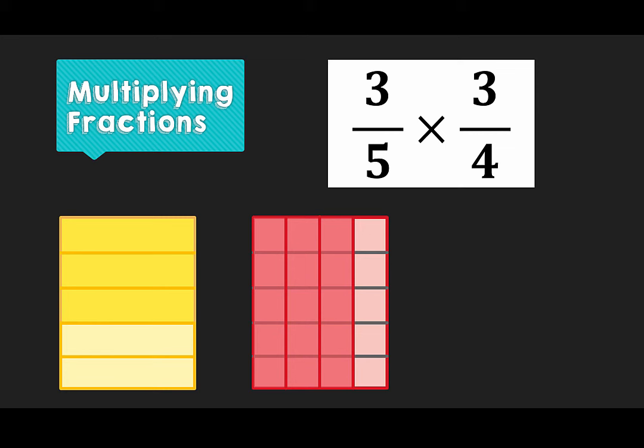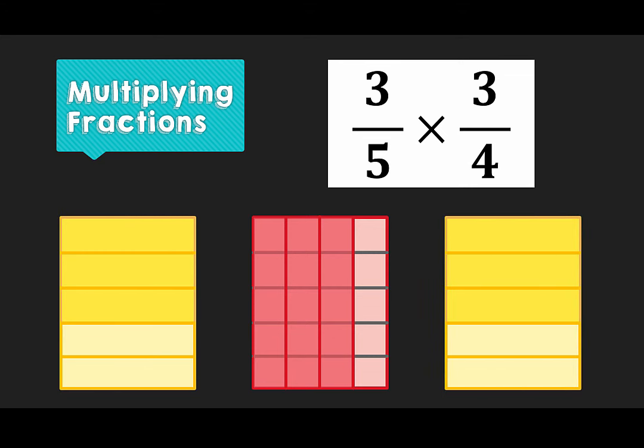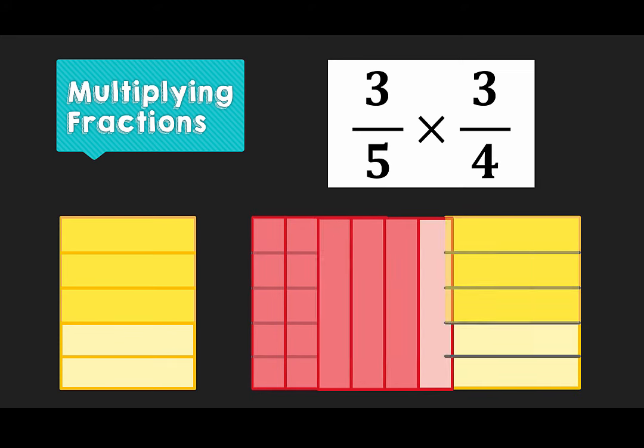Finally, we are going to overlay our two fractions and see where they overlap. This area of overlapping will give us our final answer. So here's our 3 fifths, and we are going to overlay our 3 quarters.